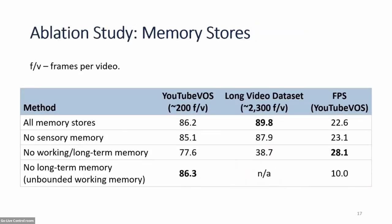We also show an ablation study of the memory stores. Our full method with all memory stores is the baseline. Removing sensory memory causes worse performance in both short and long term. Removing working memory — which also removes long-term memory since it's the basis — causes much worse performance especially in the long term, as without working memory it becomes a sensory-memory-only (recurrent) model that doesn't work well long-term. Lastly, removing just the long-term memory slightly improves short-term performance but fails on long video datasets and is also much slower.